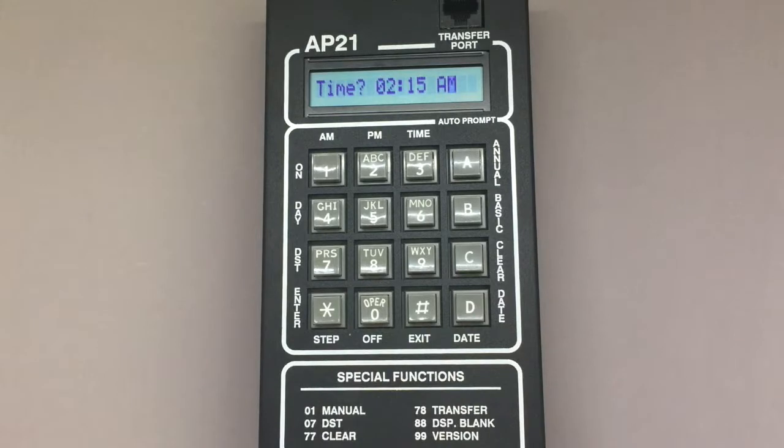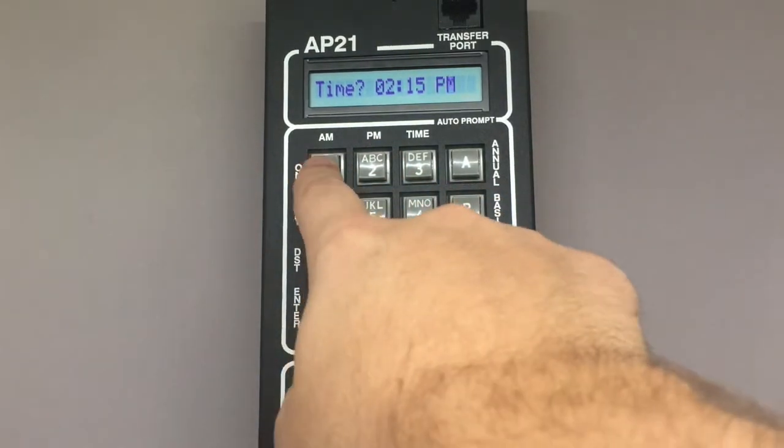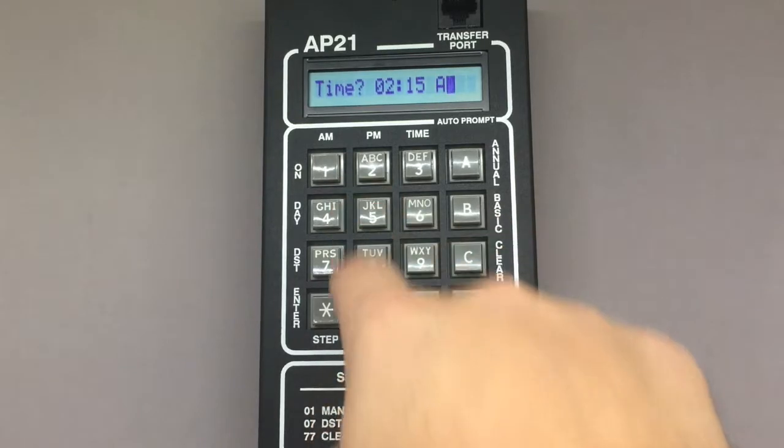The cursor will move to the AM-PM designator. The default input is AM, so if it's currently AM when you're programming your AP21, you can just press star. To change the AM to PM, you can press 2. 1 will change it back to AM, and then 2 will change it to PM.